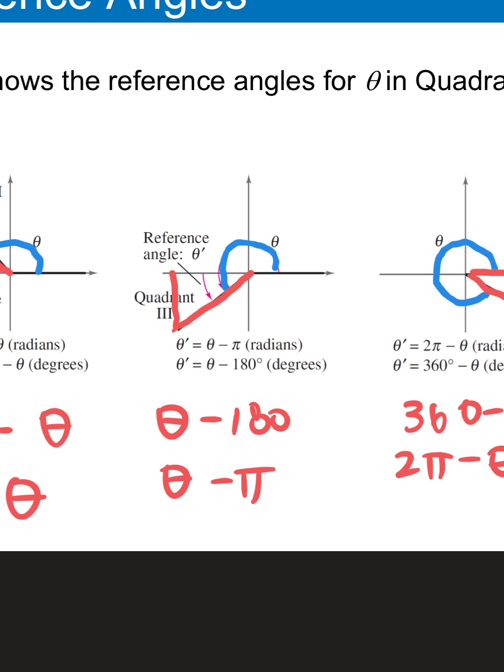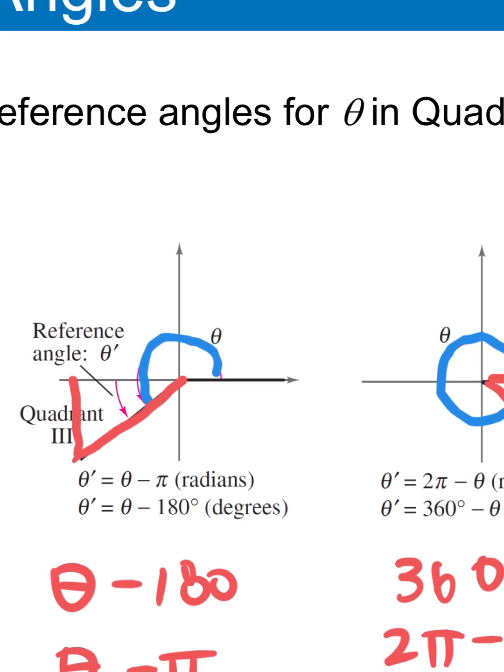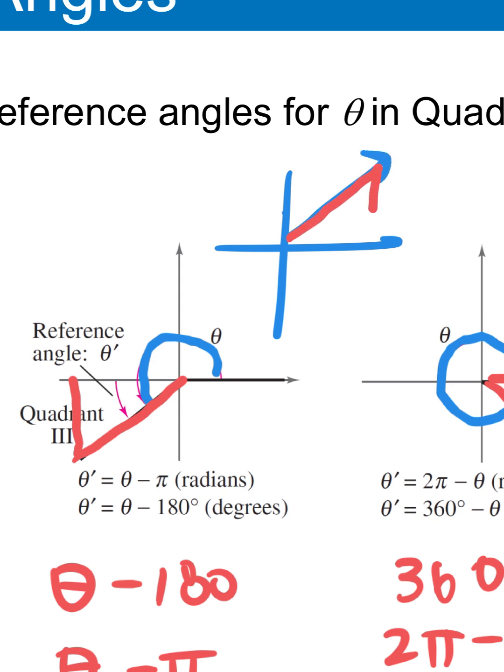What quadrant did I skip? Quadrant 1. In quadrant 1, the degree measure is between 0 and 90. So if your given angle is in the first quadrant, your given angle is the same as the reference angle. If you draw the reference angle from the terminal side to the x-axis in quadrant 1, it's the same angle. So if someone says the angle is 74 degrees, the reference angle is 74 degrees — because reference angles are always acute and positive.